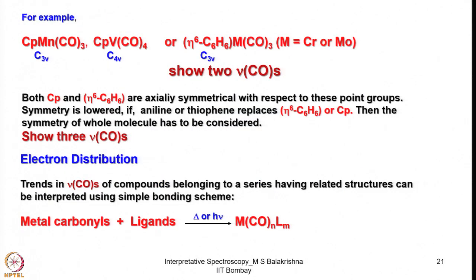For example, consider cyclopentadienyl tricarbonyl manganese, cyclopentadienyl tetracarbonyl vanadium, and tricarbonyl benzene chromium or molybdenum. Electron counting: Mn in +1 state gives 6 + 6 + 6 = 18 electrons; V in +1 state gives 6 + 4 + 8 = 18 electrons; and the arene complex is also 18 electrons. So all three are 18-electron complexes.